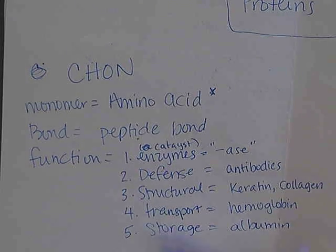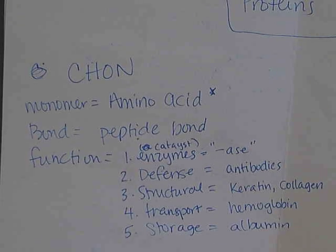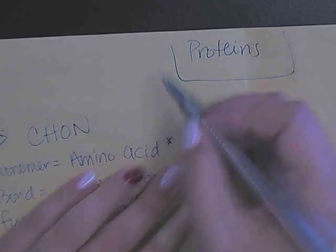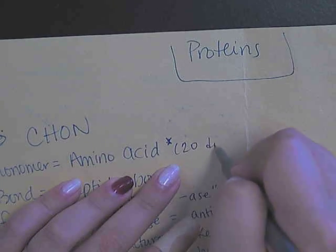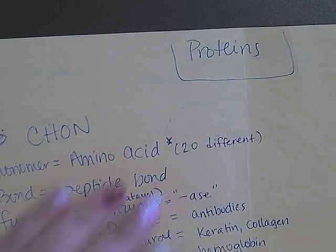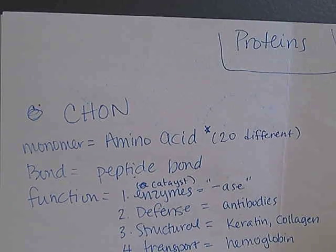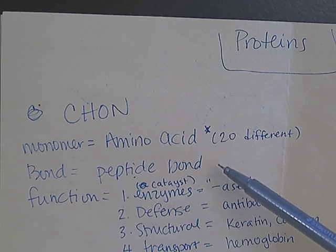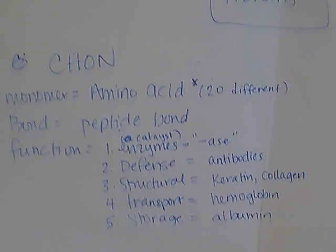First, I'm going to review some basics about macromolecules. Proteins are made up of carbon, hydrogen, oxygen, and nitrogen, with no specific ratio for these. The monomers of proteins are amino acids, and there are 20 different amino acids — your textbook may have a chart listing them, but you do not have to memorize them. The type of bond that holds proteins together is called a peptide bond.